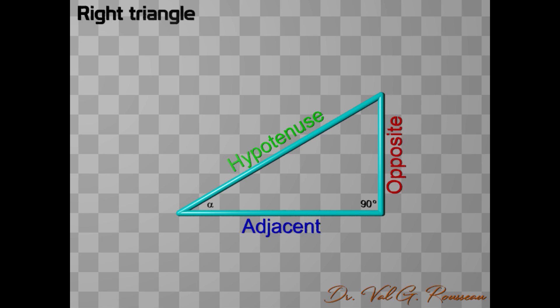Should we have chosen the other angle at the top right, the adjacent side would be the vertical side, while the opposite side would be the horizontal side. So, keep in mind that these definitions are relative.